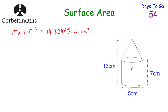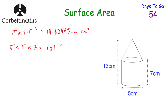Now for the curved surface of the cylinder: we find the circumference of the circle and multiply by the height of the cylinder. So pi times the diameter of 5 gives the circumference, then multiply by the height of 7. That gives us 35 pi, or 109.9557429 centimetres squared. That's the area of the curved surface of the cylinder.